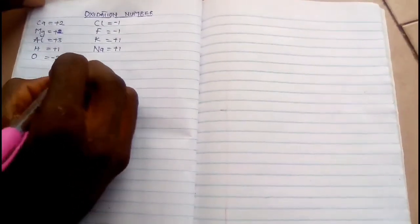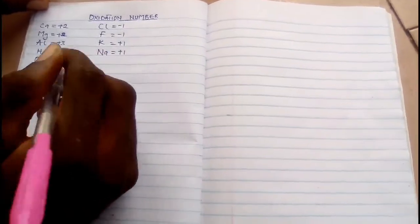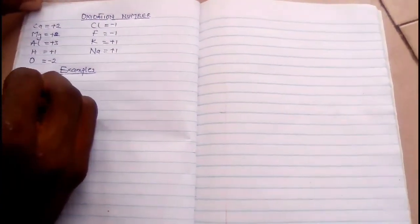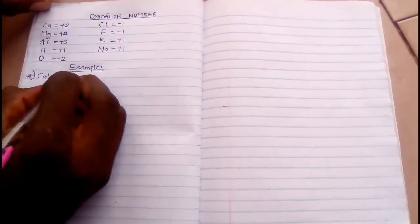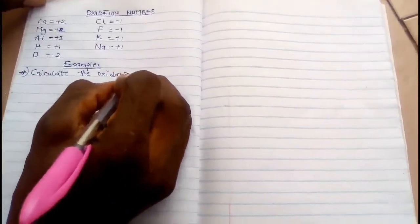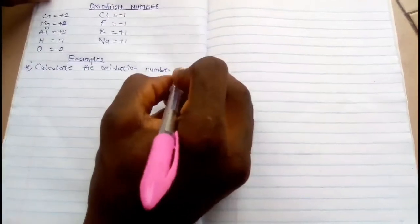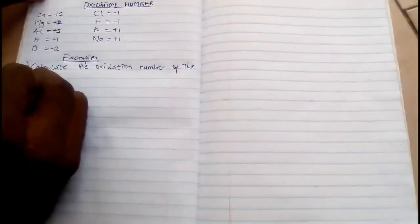We might bring other elements there in the course of our explanation. So let us go straight to examples. If you are told to calculate or to find the oxidation number of the following: